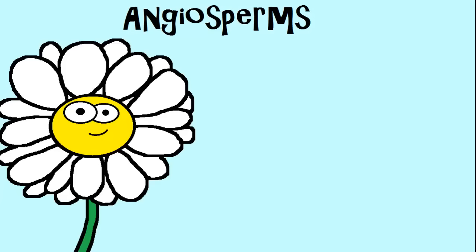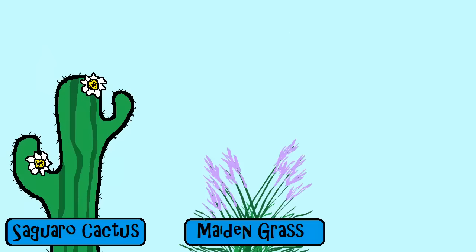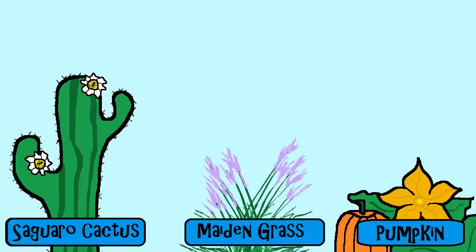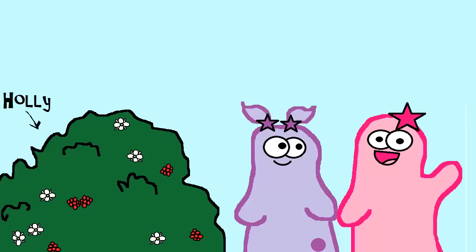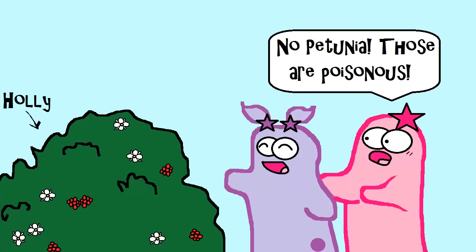Angiosperms are flowering plants, and they are some of the most successful and diverse plants around. When you think of flowering plants, you may not realize that a lot of plants actually produce flowers—many grasses, for example, and many crops. All flowering plants bear fruit, just maybe not the type of fruit you are thinking of. Not all fruits, going by the biological definition, are sweet or even edible.